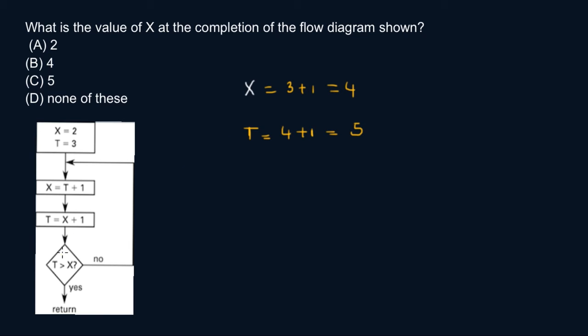Right here the decision is asking you: is t greater than x? So t is 5, x is 4, so yes. That is the end of the algorithm, you're not going anywhere else. Your final value of x is 4, so x is actually 4. This is your final answer.